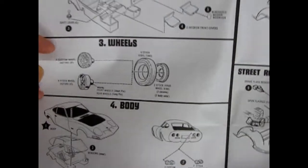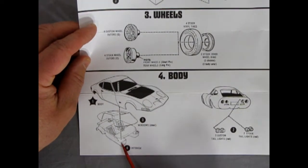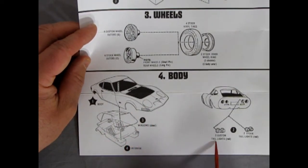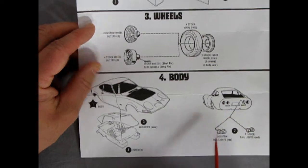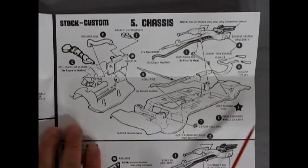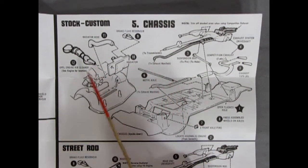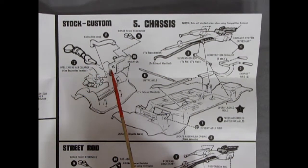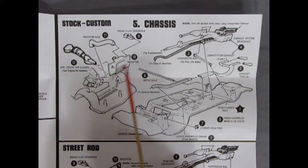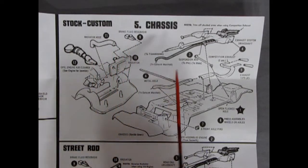And then we get into the body section here with the windows, body, and the interior completed popping together. And then you pop in your two tail lights into the back. And then we're getting into our stock and custom chassis over here in step five. So here your engine air cleaner is going to glue in, it actually goes through a hole here on the firewall. The radiator molded in, the radiator hose, the brake fluid reservoir.